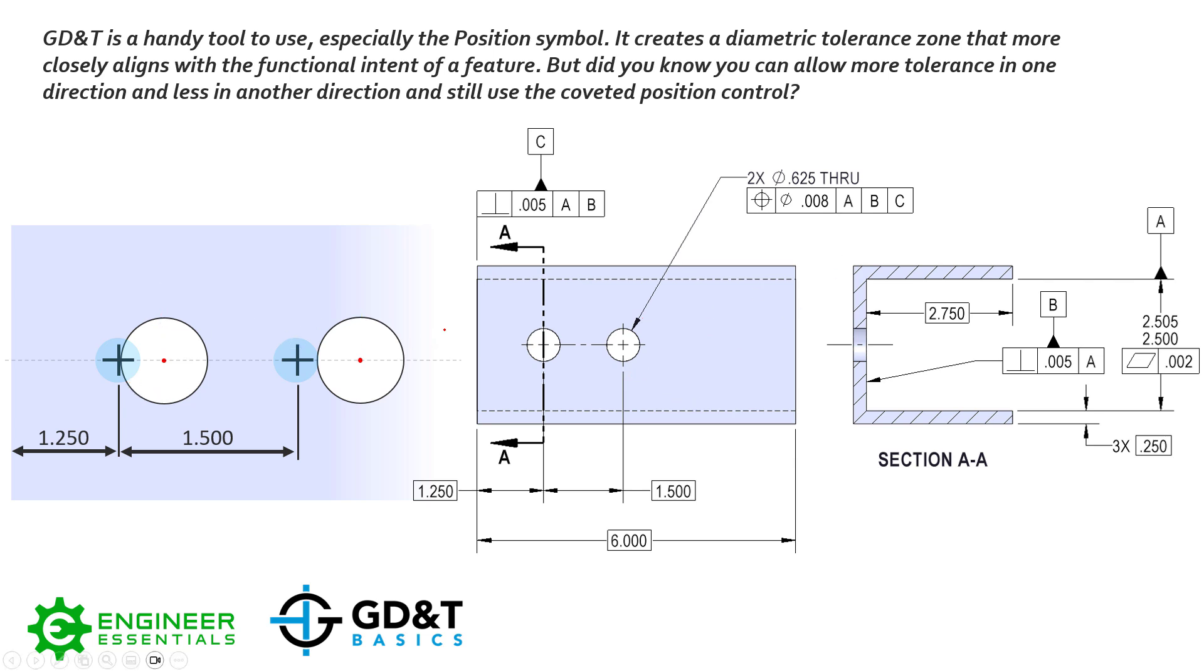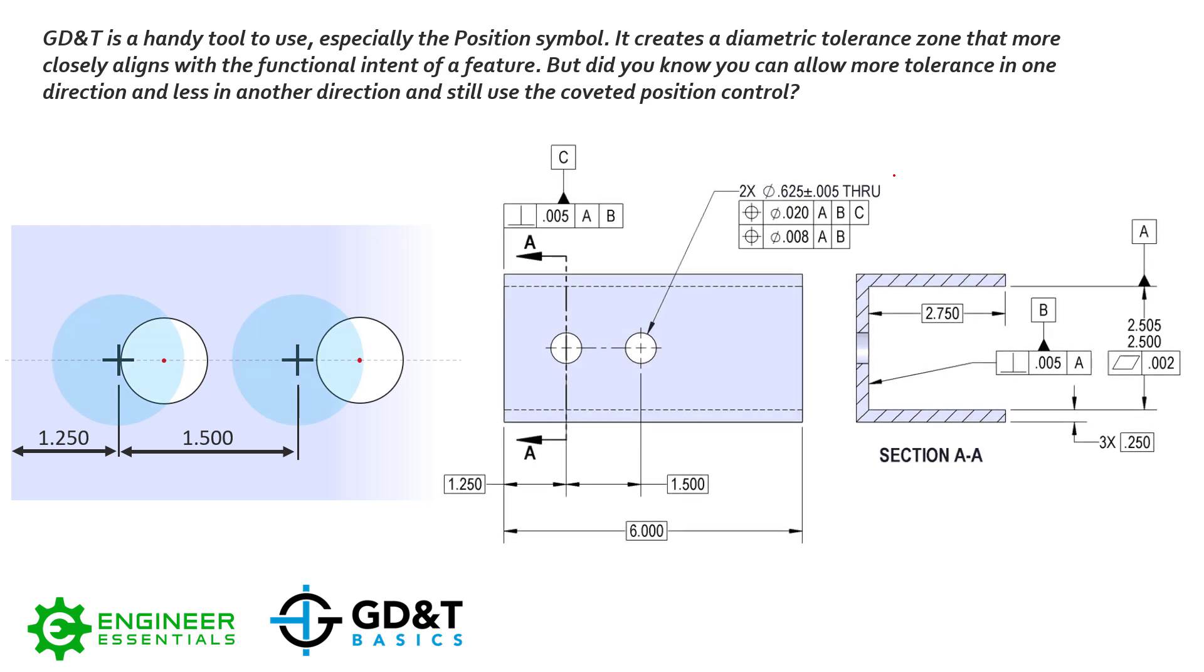So how would we get around this with GD&T? How we accomplish this is multiple single segment, and it might look scary, but it's really not that bad. It's simply just two position feature control frames stacked on top of each other. The top one has a position feature control frame of twenty thousandths with respect to A, B, and C. We have with respect to A, B, and C, and that locks in all six degrees of freedom.